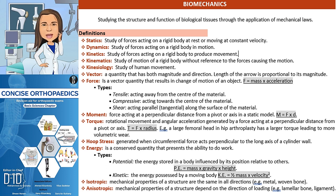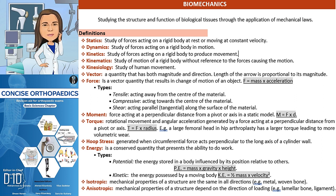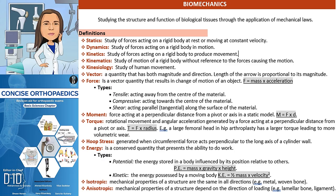A structure is said to be isotropic if its mechanical properties are the same in all directions, such as in metals or woven bone. In contrast, a structure is anisotropic if its mechanical properties depend on the direction of loading, such as in laminar bone or ligaments. For more details, please refer to the Concise Orthopaedics book.